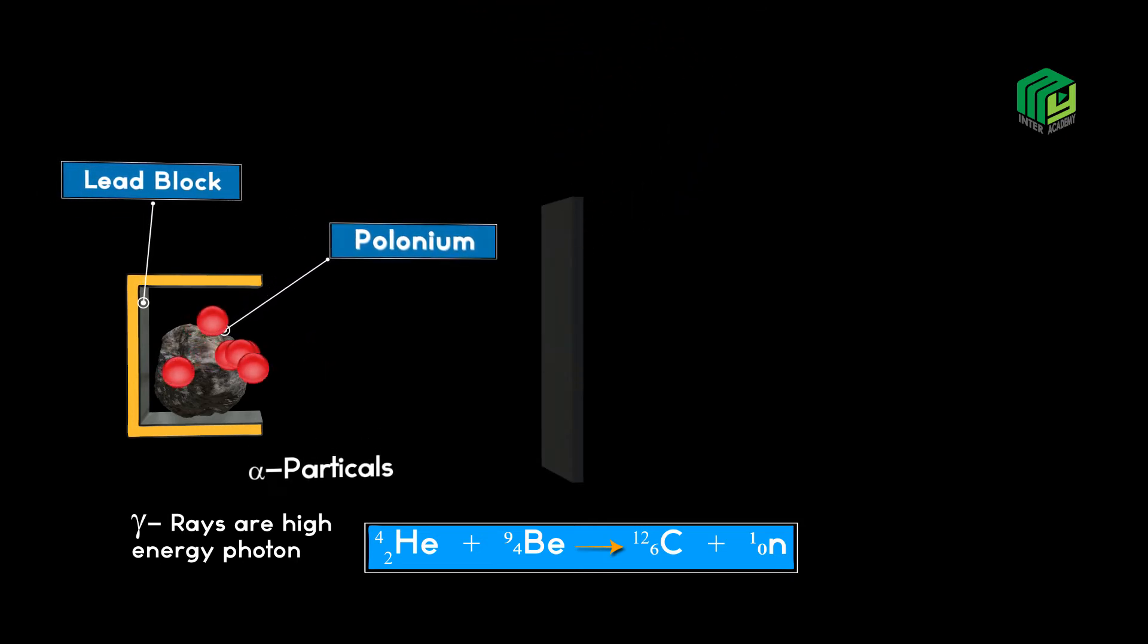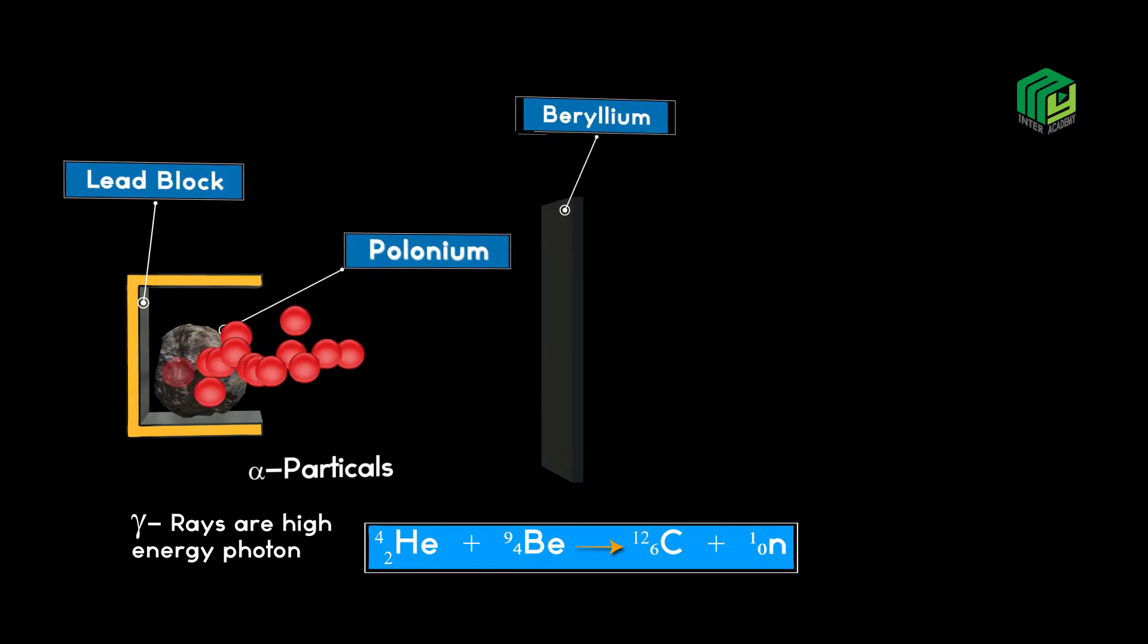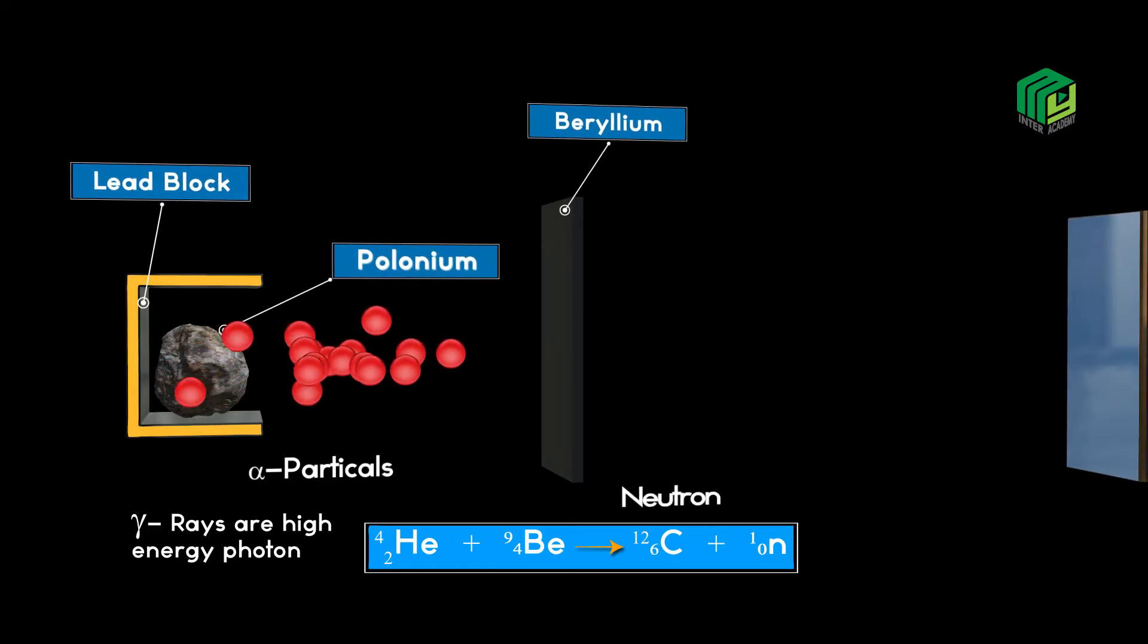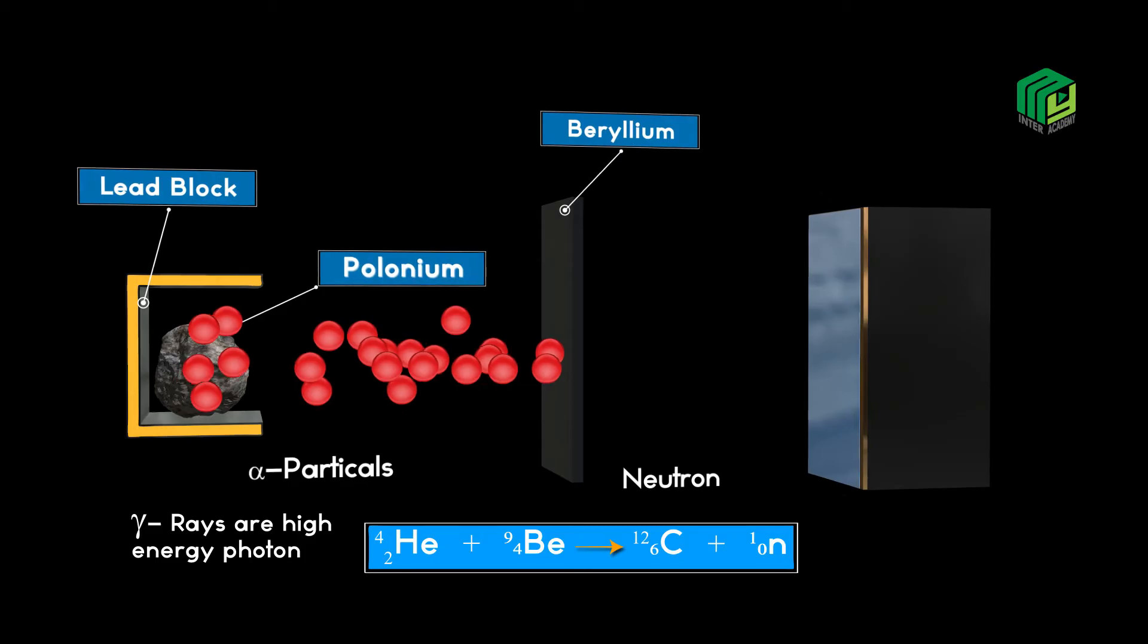When alpha particles strike the beryllium metal, they release one neutron with the formation of carbon.